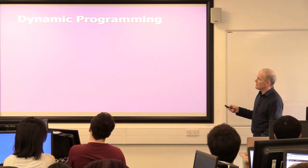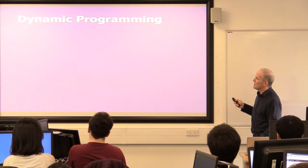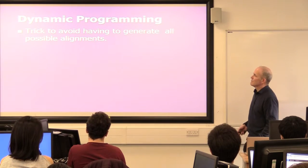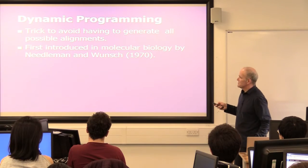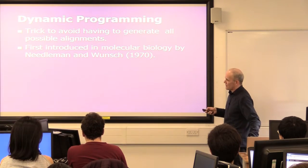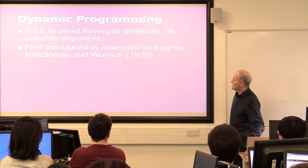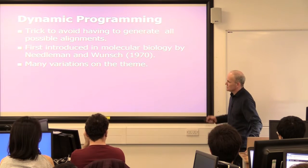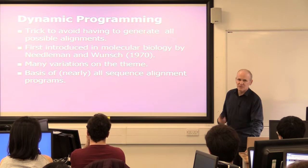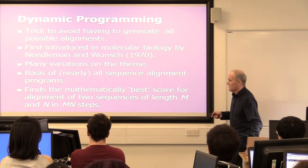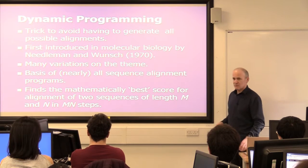So there's a technique called dynamic programming. It's a clever computing approach that all alignment programs use and it avoids generating all possible alignments. It was first introduced to molecular biology in 1970 by Needleman and Wunsch in the Journal of Molecular Biology for comparing protein sequences. It is guaranteed to find the mathematically best score for alignment of two sequences of length M and N in MN steps — the product of the lengths. So 10,000 steps for sequences 100 amino acids long, compared to 10 to the 75.